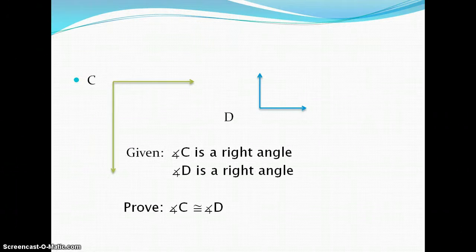Here's a diagram. We have angle C and angle D. We are given that angle C is a right angle and angle D is a right angle. We want to prove that our angles are congruent. We don't have the proof of the theorem yet, so we're going to get that underway. That way, in the future, if you see this, you'll be able to jump to that conclusion right away.